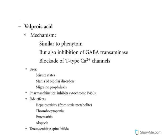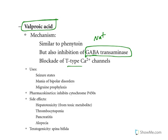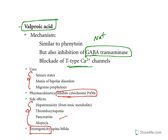Valproic acid is a very important drug with multiple mechanisms of action. It blocks sodium channels, enhances GABA by inhibiting GABA-transaminase (the GABA-metabolizing enzyme), and blocks calcium channels. It is used to treat seizures and is also used to treat mania and migraine. This drug inhibits cytochrome P450 enzymes. Side effects include hepatotoxicity, thrombocytopenia, pancreatitis, and alopecia. It also causes teratogenicity. Notably, all three drugs — phenytoin, carbamazepine, and valproic acid — cause teratogenicity.